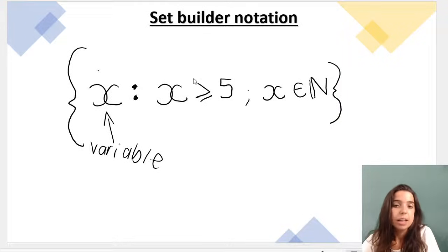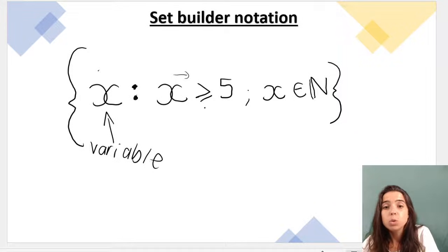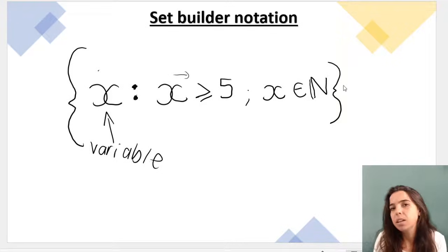We're going to say that our variable's in the set, so x is greater than, so we read it this way, greater than or equal to 5. And x is an element of natural numbers. Now it sounds very complicated, but remember x is an element of means x is a member of.